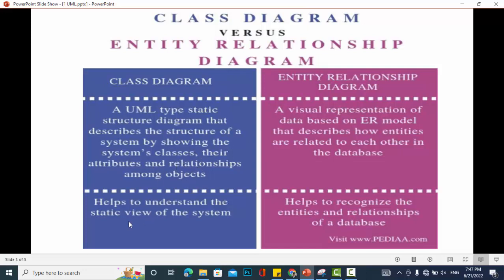The class diagram helps us to understand the static view of the system. And the entity relationship diagram is the visual representation of data based on ER model that describes how entities are related to each other in the database. The ER diagram helps to recognize the entities and relationships of the database.